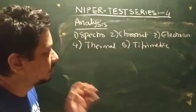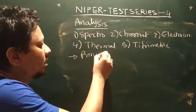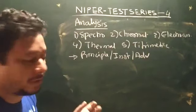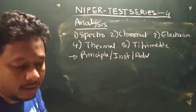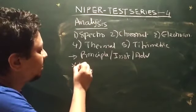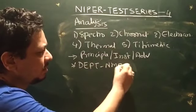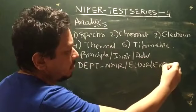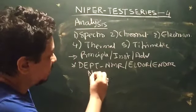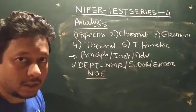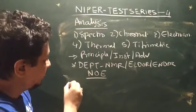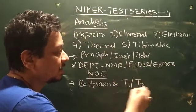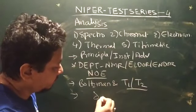For all the methods you are required to know the principle, the instrumentation, and the advanced forms. For spectroscopic methods, you have UV, IR, NMR, and mass. For advanced NMR, you must know DEPT NMR, used in C-13 NMR form. Then what is LDOR, what is NOE — and the relation between the Boltzmann equation and T1 and T2, that is relaxation time.